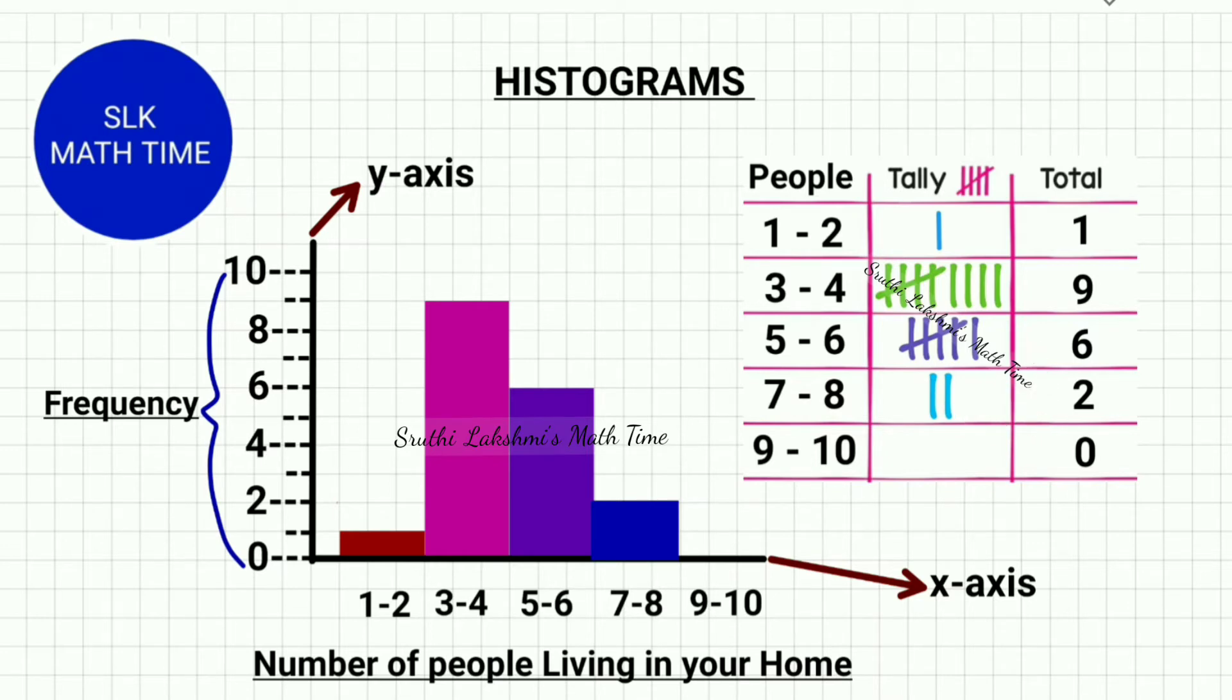So I created a histogram by using this data. So I want to know, how many students have 5-6 family members in their home? So by using this histogram, I can see that 6 students have 5-6 people living in their home.